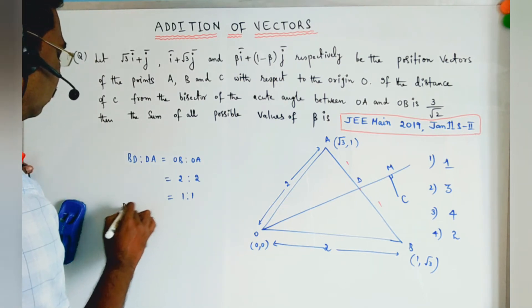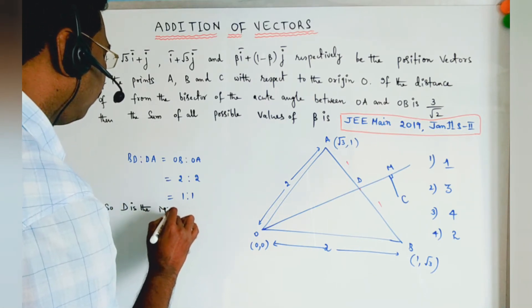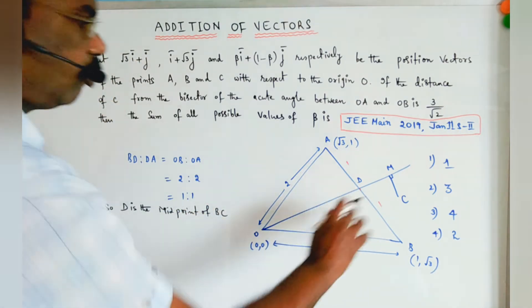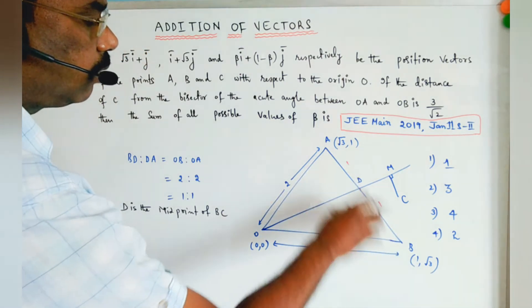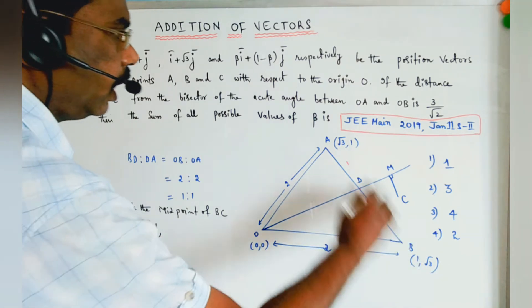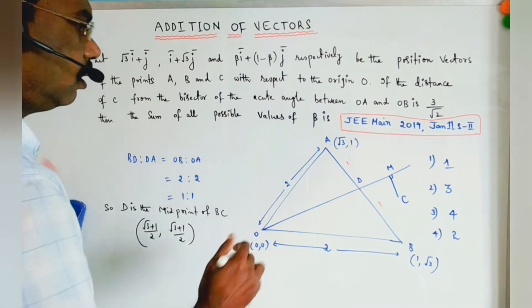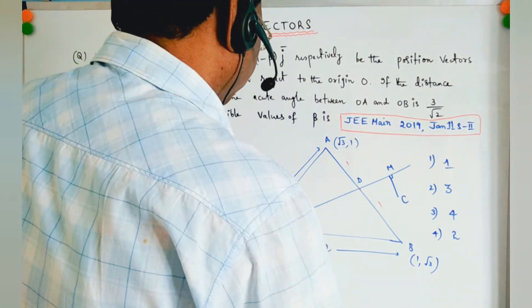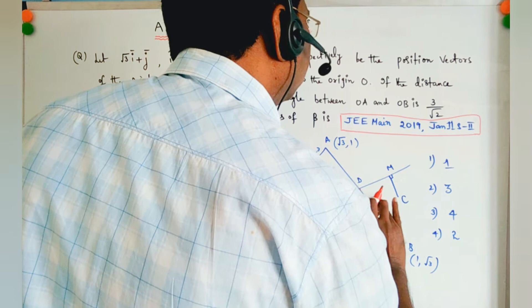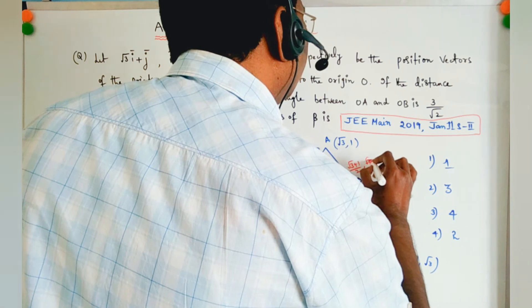Since D is the midpoint of AB, its coordinates are ((√3+1)/2, (√3+1)/2). So the D point is ((√3+1)/2, (√3+1)/2).